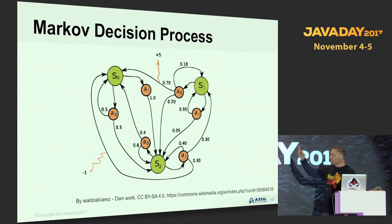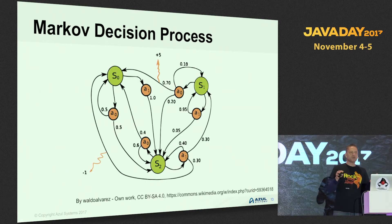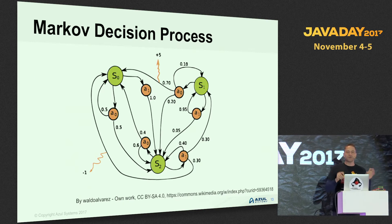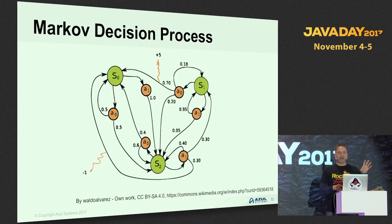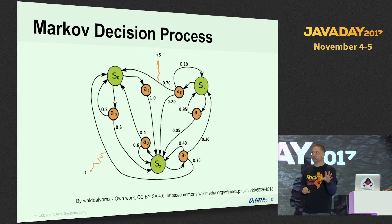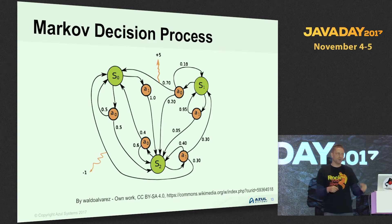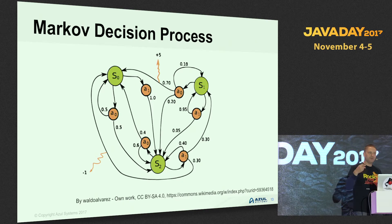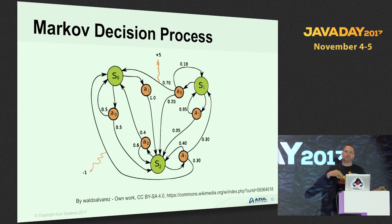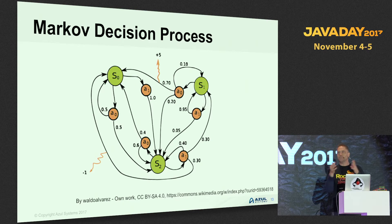You can represent a Markov decision process as a graph: green blobs are states, orange blobs are actions, links between them are the probabilities of moving from a state through an action to another state, and the orange squiggly arrows are the results. This is a way of representing a Markov decision process graphically, but you can do it mathematically in your computer program.